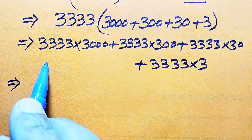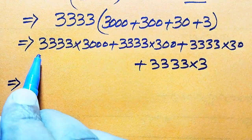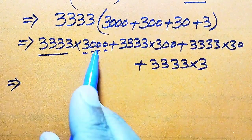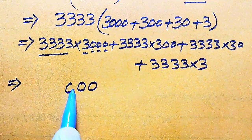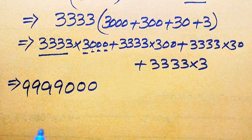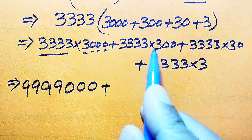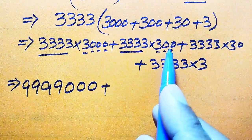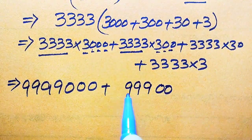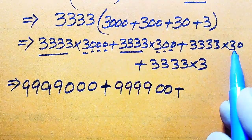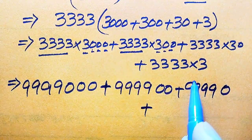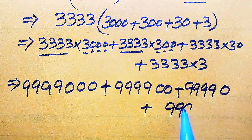Here is a nice trick to multiply any bigger number. For 3333 times 3: the zeros produce zeros and 3 times 3333 gives 9999. For 3333 times 300: the two zeros give zeros and 3 times 3333 gives 9999. For 3333 times 30: zero times 3333 gives zero and 3 times 3333 gives 9999. And the last multiplication, 3333 times 3, also gives 9999.